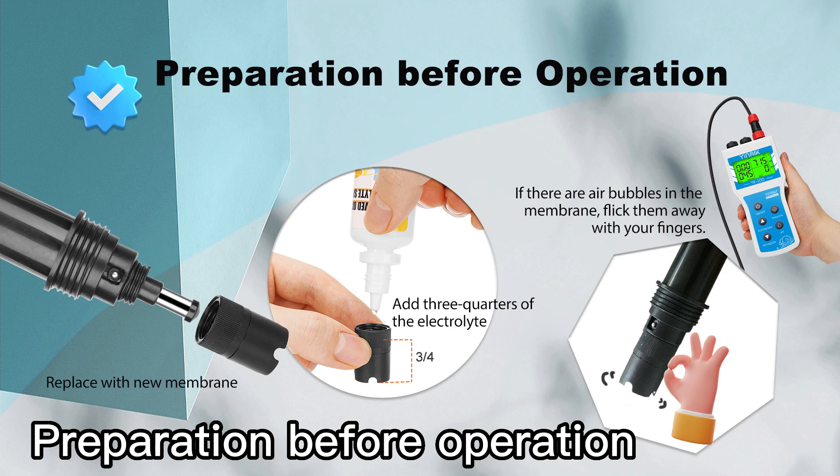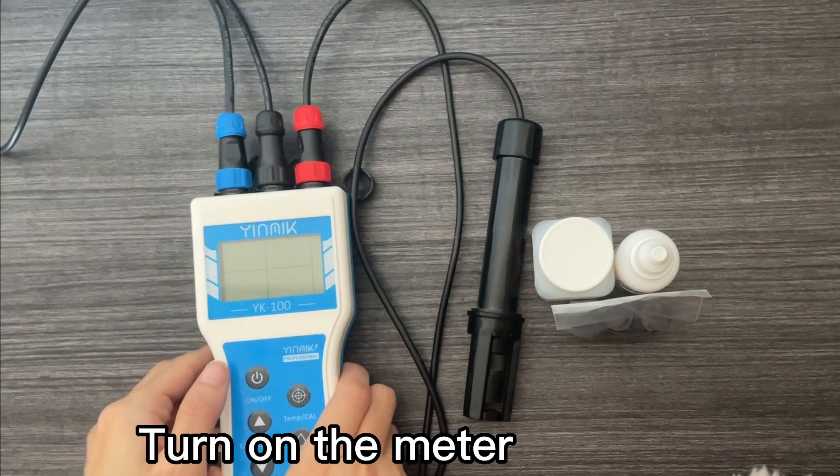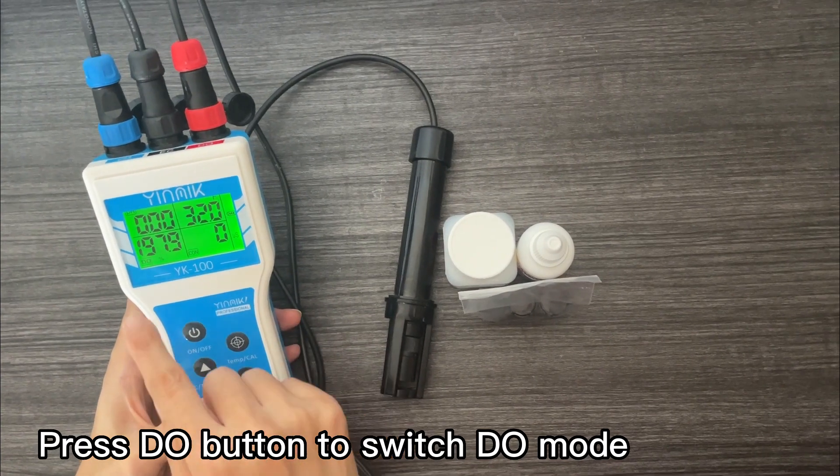Preparation before operation. Turn on the meter. Press the DO button to switch to DO mode.